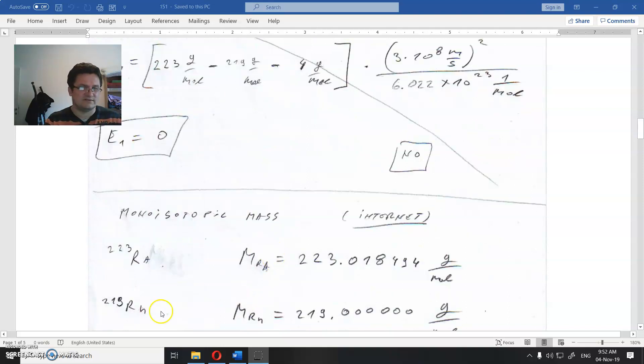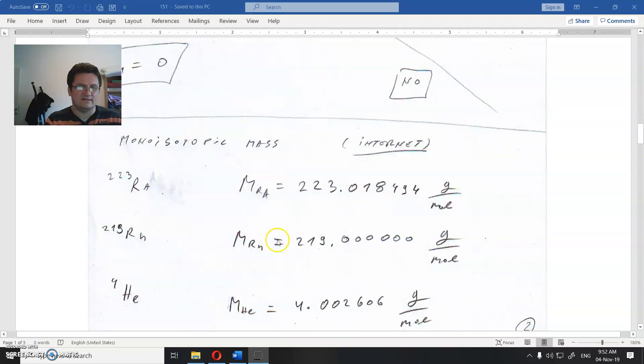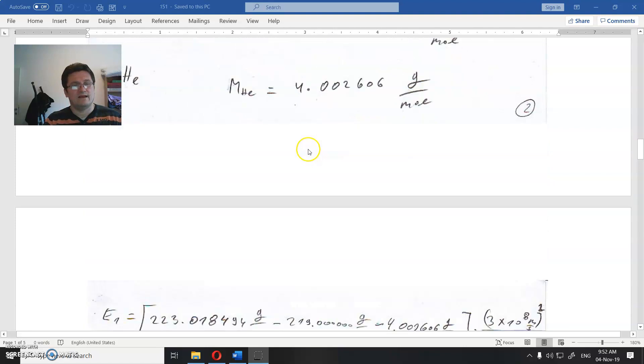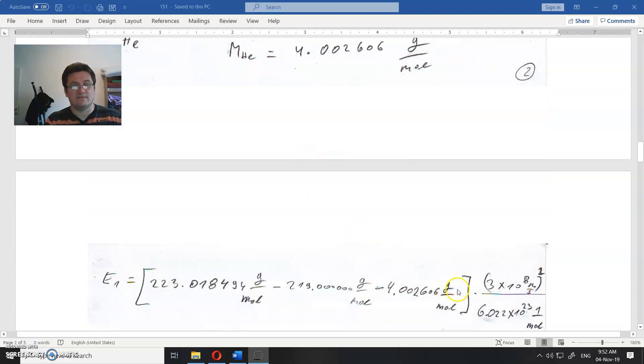We need the monoisotopic mass for this kind of radium, this kind of radon, and this kind of helium. You need to take all these numbers into account for the mass defect.